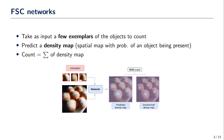Few-Shot Counting networks take as input few exemplars of the object to count and the input image, and predict a density map that indicates the probability of an object being present at each spatial location in the input image. The networks are typically trained with an L2 loss between predicted and ground truth density maps.